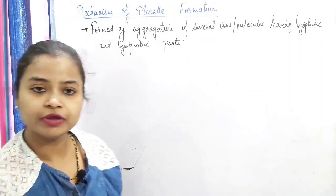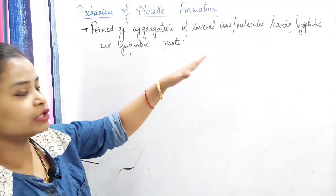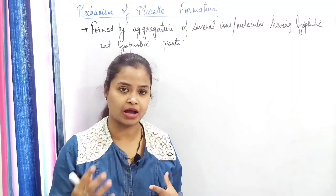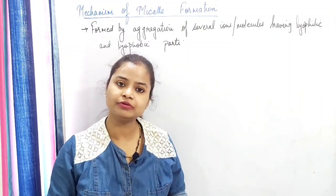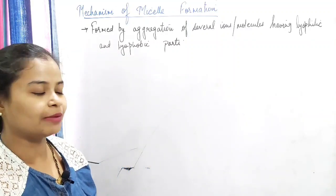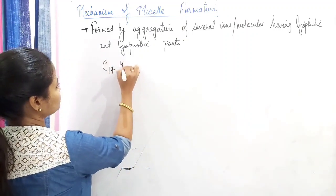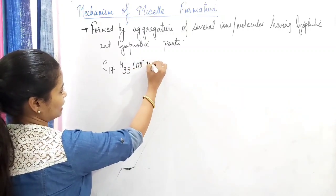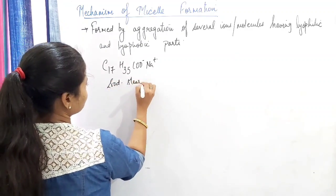Now let's see the mechanism of micelle formation. Micelles are formed by the aggregation of several ions or molecules which have both lyophilic as well as lyophobic parts. The commonest example for micelles is soap or detergent. Let us take the example of sodium stearate itself — C17H35COO⁻Na⁺. When it is dissolved in water, it ionizes to give stearate ions and sodium ions.